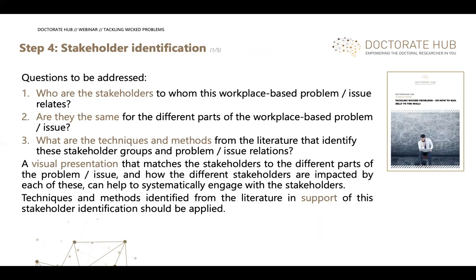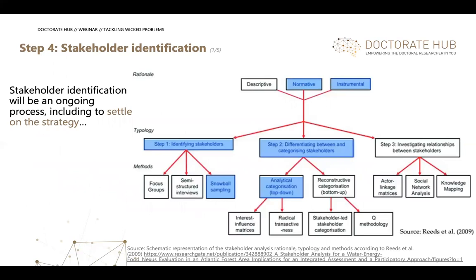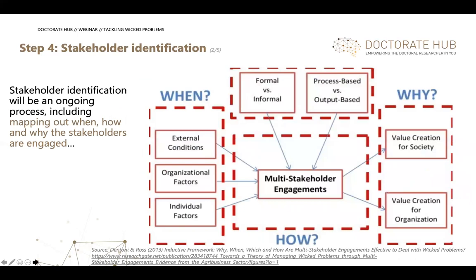Step four: stakeholder identification — determine which stakeholders correspond to different parts of the problem and what techniques and methods the literature provides for engaging them. There are quite a few approaches, including one that shows different ways and points in time for stakeholder engagement. It all starts with settling on a strategy, after which you can identify, map out when, how, why, and for what purpose you want to engage the stakeholders.